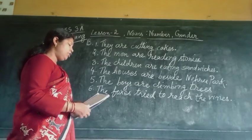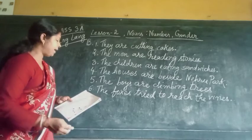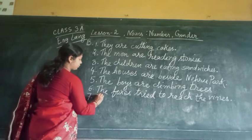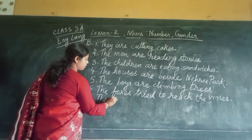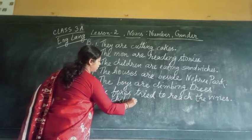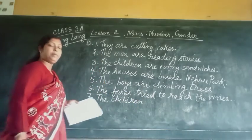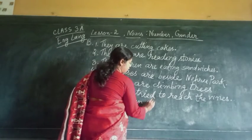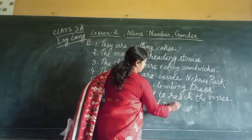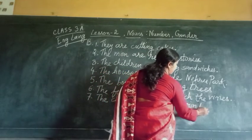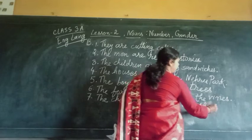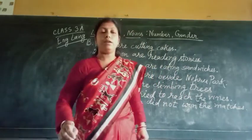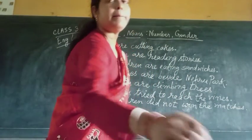Number 7: The child did not win the match. 'Child' will change into 'children' — children is an irregular plural. So the answer is: The children did not win the matches.